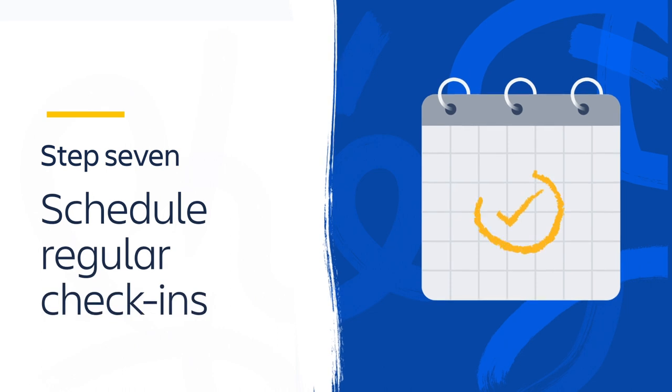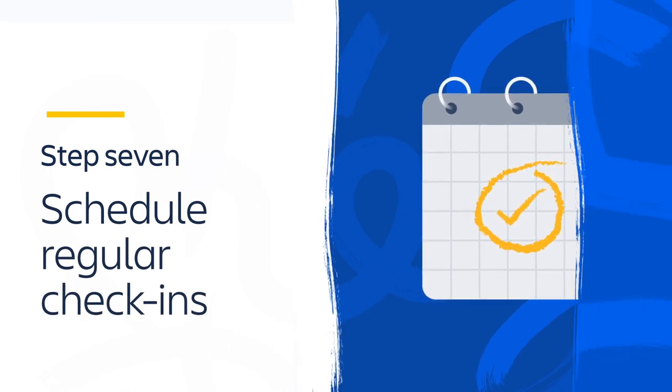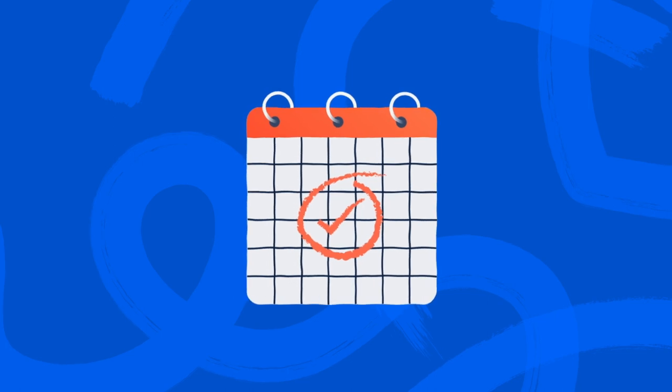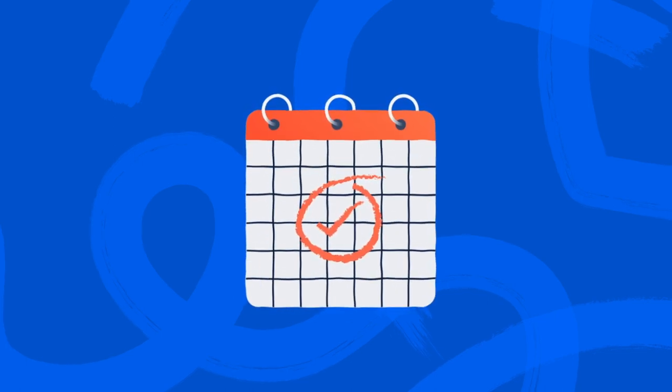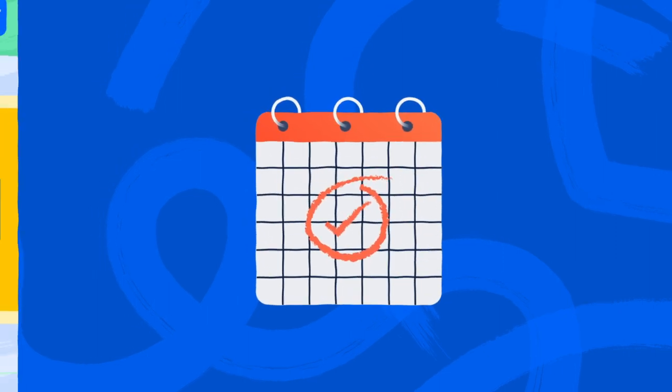And finally, Step 7. Schedule regular check-ins. Make capacity planning a habit by setting up check-ins to monitor changes in workload and continually improve how you estimate and prioritise projects.